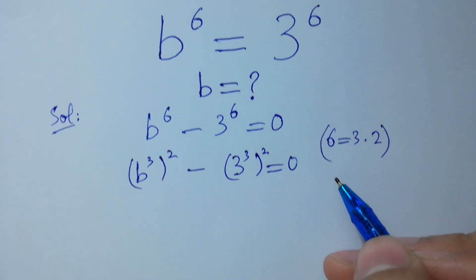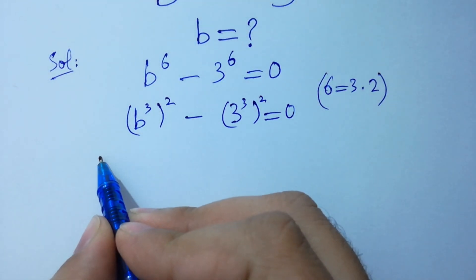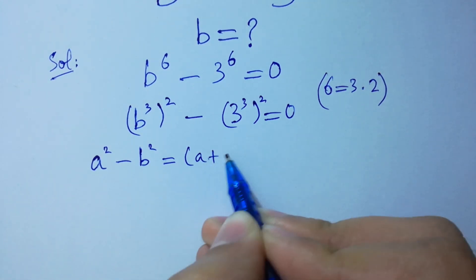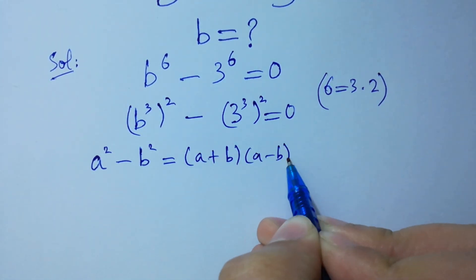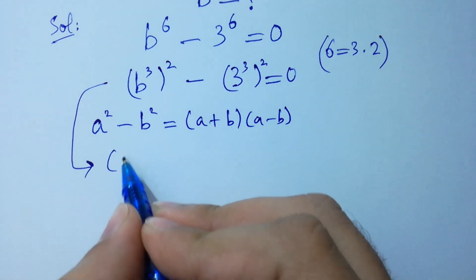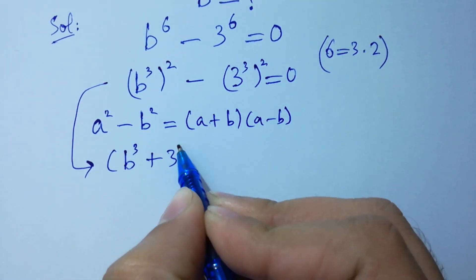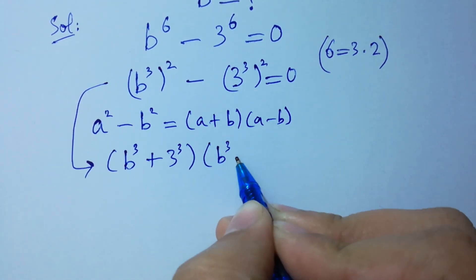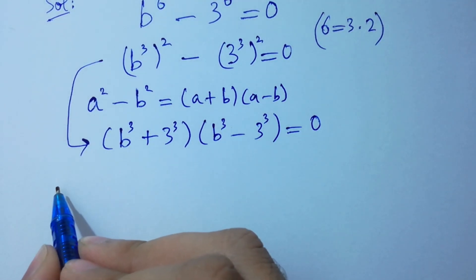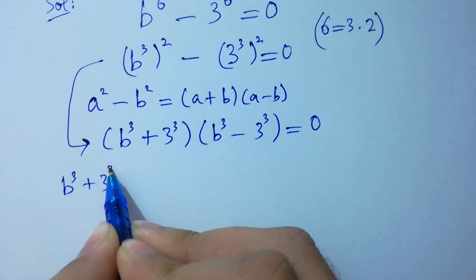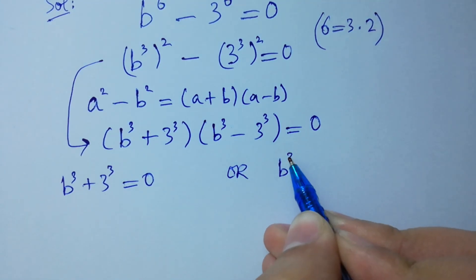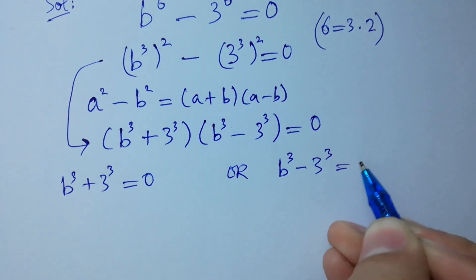As you know, the formula A squared minus B squared equals (A plus B)(A minus B). So we have (B³ + 3³)(B³ - 3³) equals 0, meaning either B³ plus 3³ equals 0 or B³ minus 3³ equals 0.